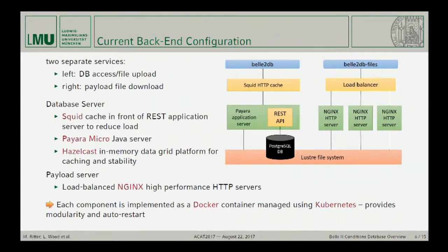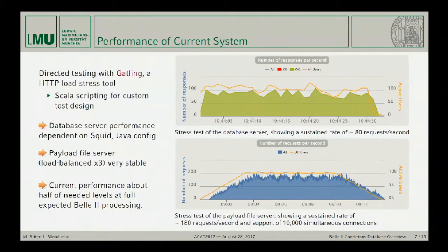Each component is implemented as a Docker container, and we use Kubernetes to orchestrate the setup, which gives us modularity and auto-restart. This has already been tested using Gatling, an HTTP load stress tool with scripting capabilities. It's been shown that the database server performance is really dependent on configuration — you can do a lot of performance tuning in the script and Java configuration. The payload server, as it is now, is already very stable with the load balancing, so there's basically nothing we have to do there.